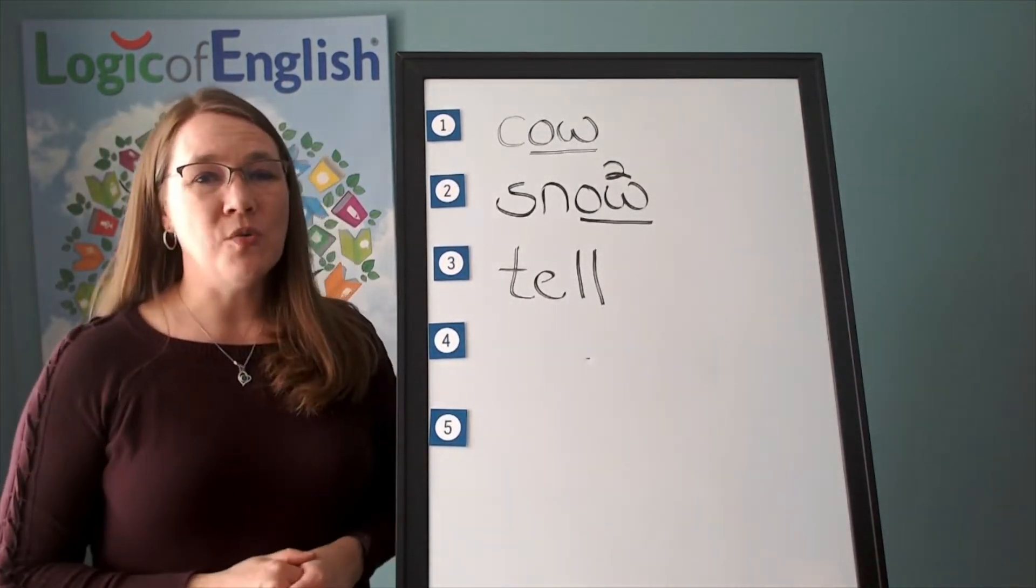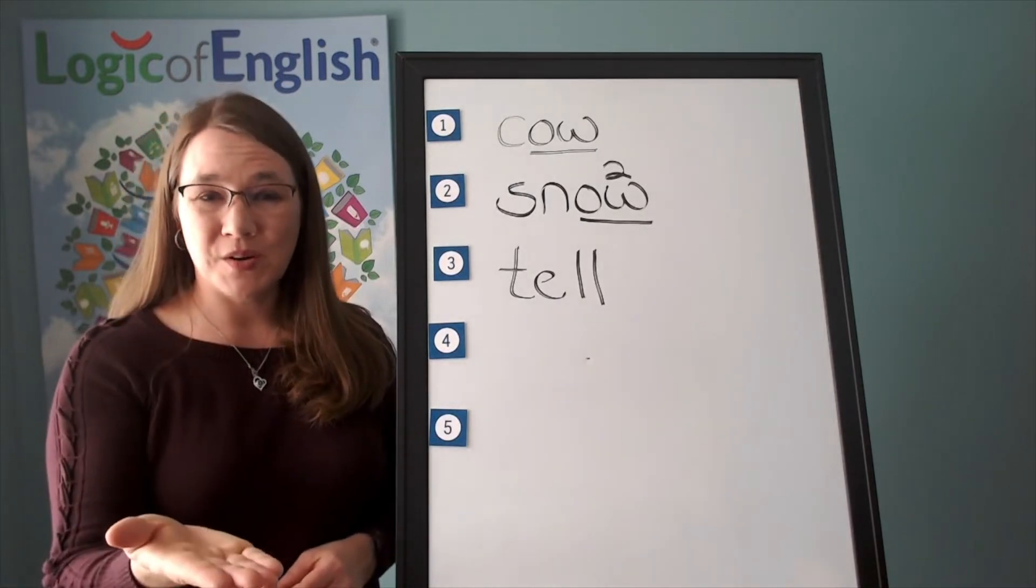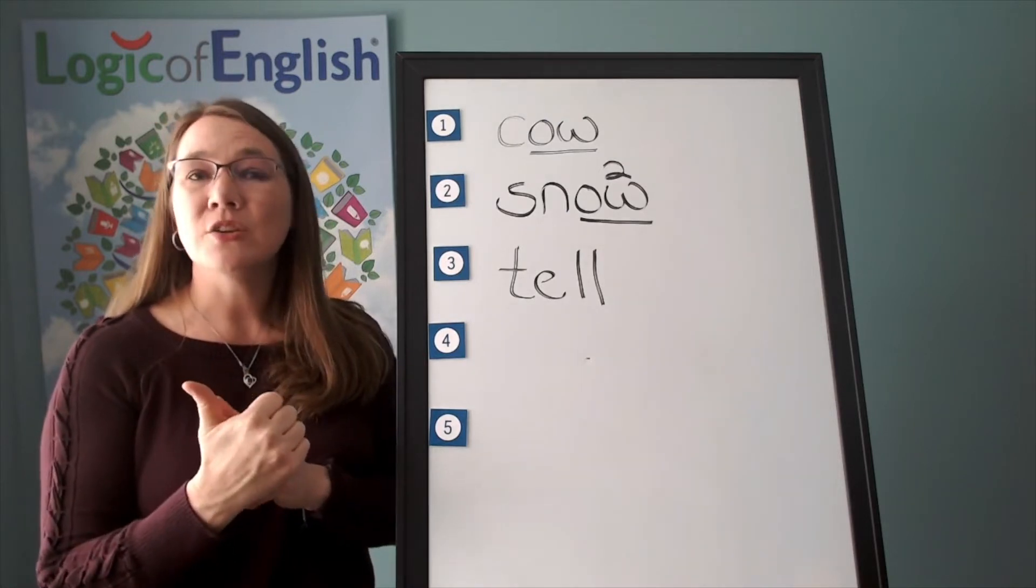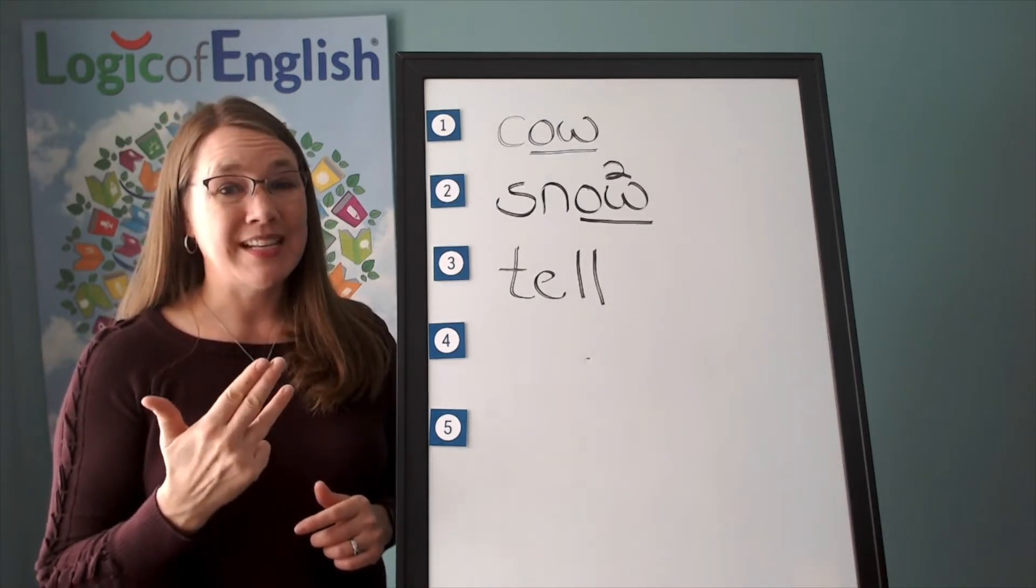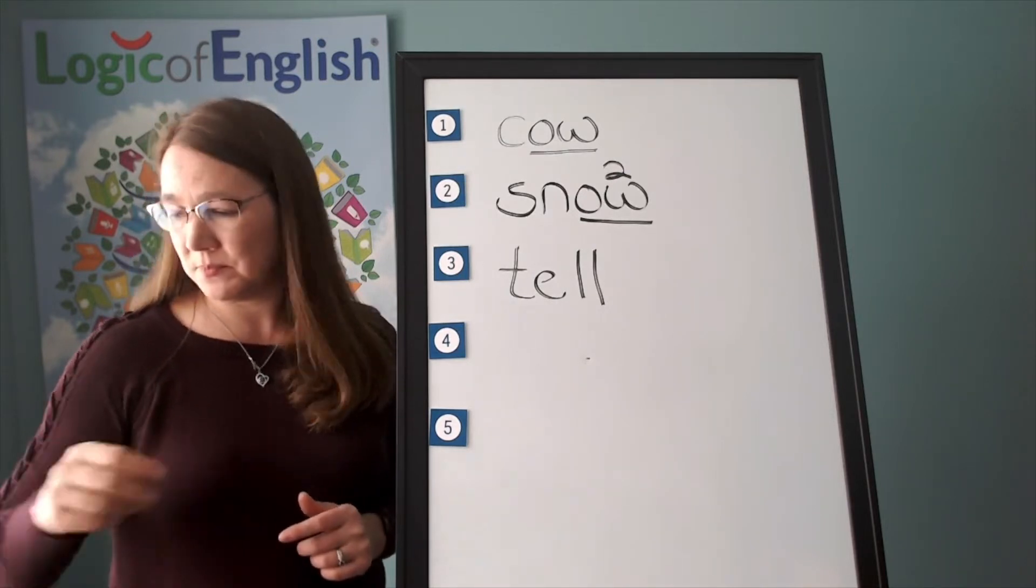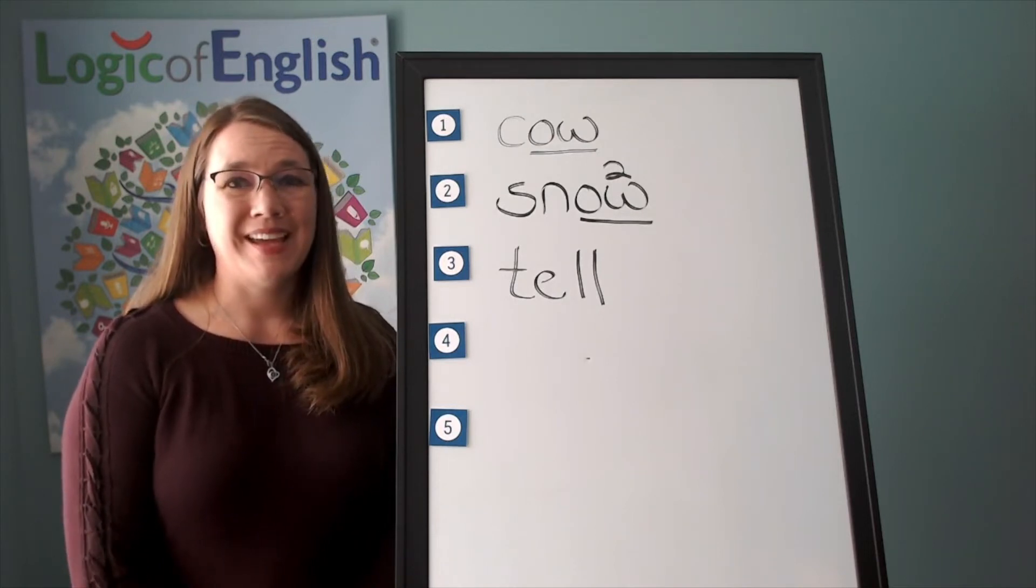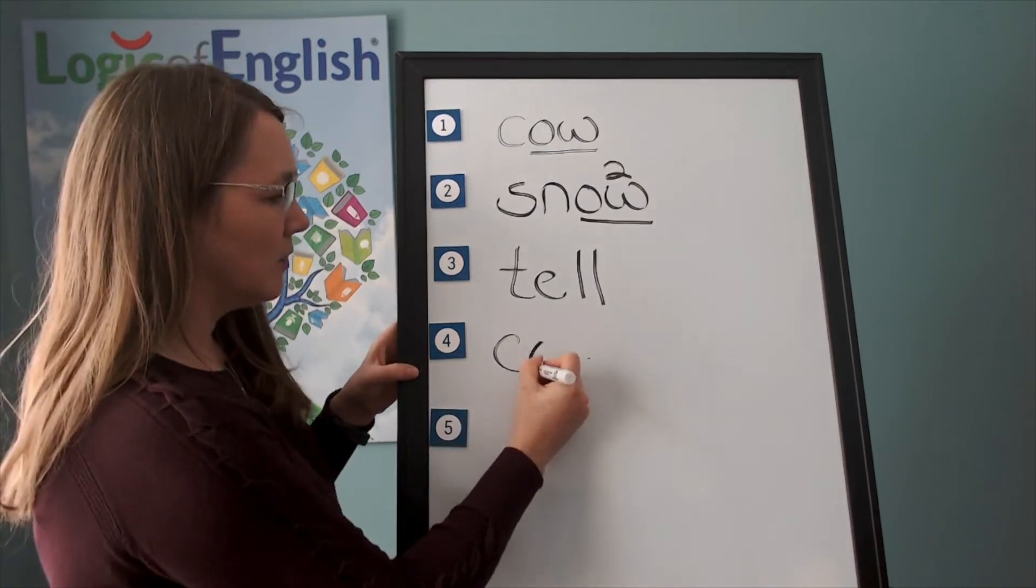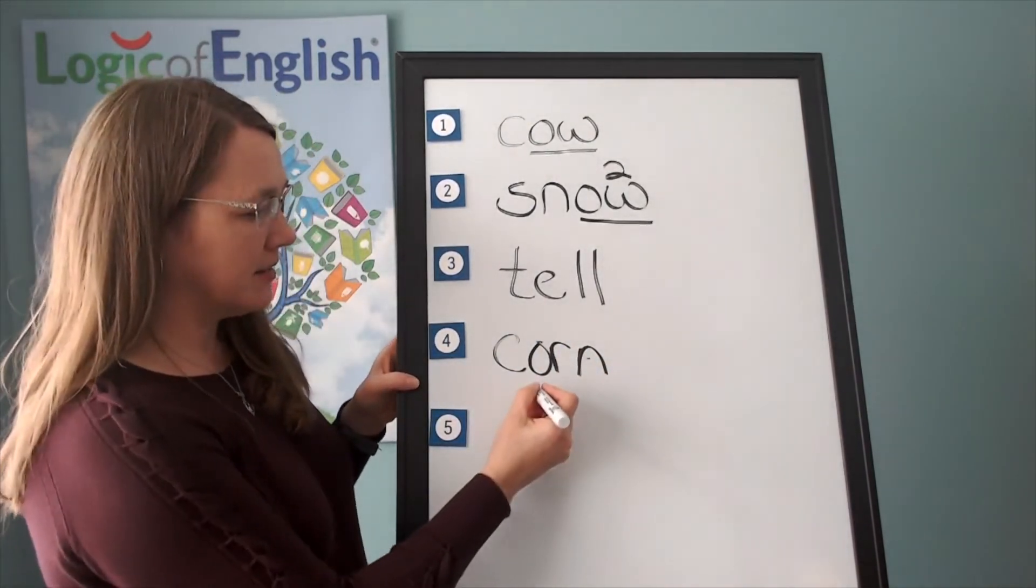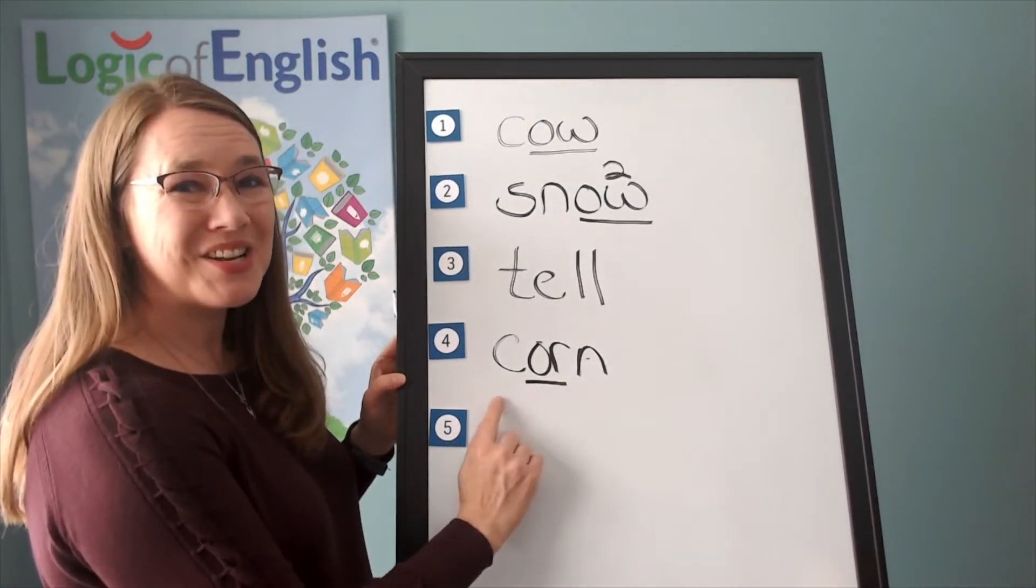The next word is corn. We will be having corn on the cob for dinner. Corn. Go ahead and say corn. Let's sound it out. K. Use a k-s. Or n. Go ahead and write corn. Corn. Excellent. Now help me to write it. K-or-n. And how will we mark it? We'll underline the or. Let's read it. K-or-n. Corn.